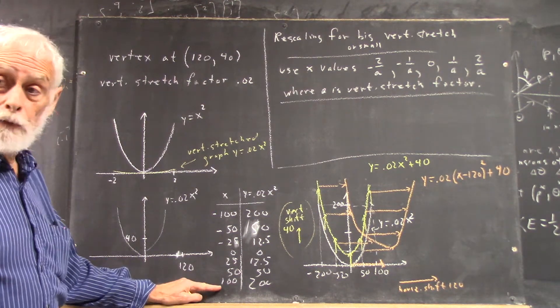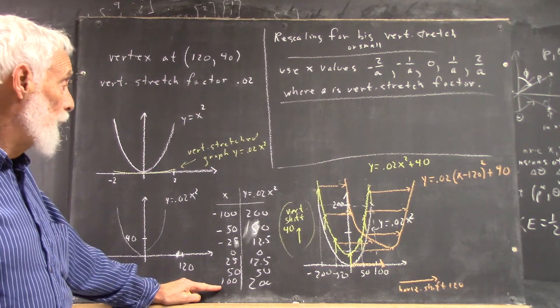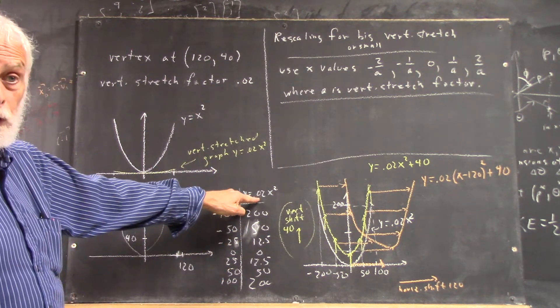This would be like for x equals 2, right? If we divide 2 by a, which is 0.02, we get 100, right?